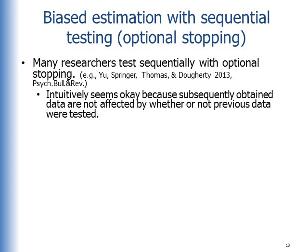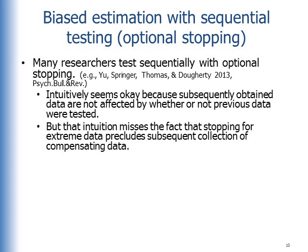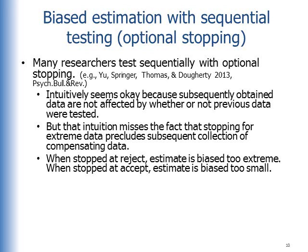Consider flipping a coin. You flip the coin several times and check: can I reject the null hypothesis that the coin is fair? You flip the coin again — the next flip is completely uninfluenced by whether or not you tested the coin before that. But that intuition misses the fact that stopping for extreme data precludes subsequent collection of compensating data. You're going to stop once you collect something that's randomly extreme, and you'll never compensate after that. When you've stopped at reject, the estimate is biased too extreme. When you've stopped at accept, the estimate is biased too small.